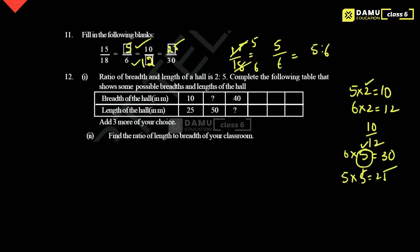The next one: ratio of breadth and length of the hole, so breadth and length will be 2 is to 5. Then complete the following table that shows the supposable breadth and length of the hole. So breadth of the hole is 10 and length of the hole is 25. So here 25 means length is 5, actually 5 into 5 we have to do. So here constant is 5. 10 means this 2 is, you can take 2 into 5 — here 5 is constant. So 2 and 5 is there.